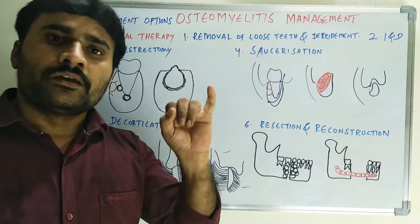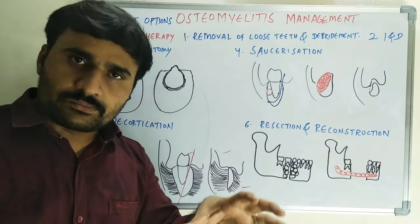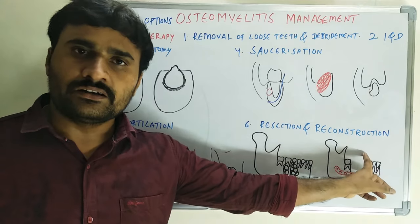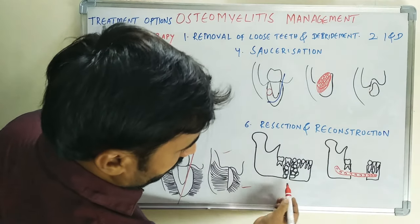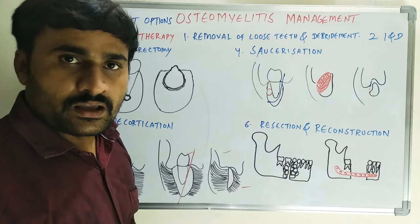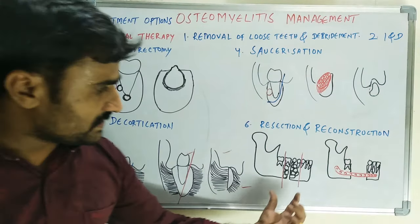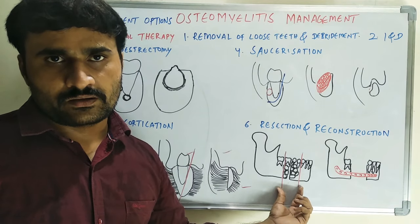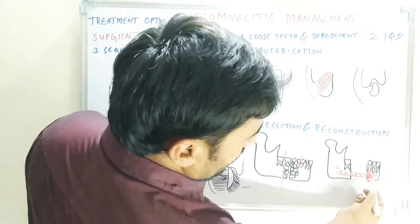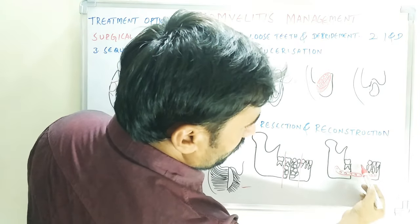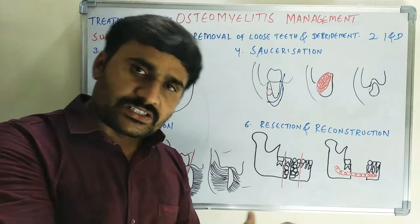Resection and reconstruction is done in cases of pathological fracture due to osteomyelitis or in cases of recurrence. For example, if there is mandibular body osteomyelitis with a pathological fracture and involvement of the premolar to first molar region, that entire amount of bone is completely resected along with the teeth and lower border. Then the two remaining fragments must be reconstructed.